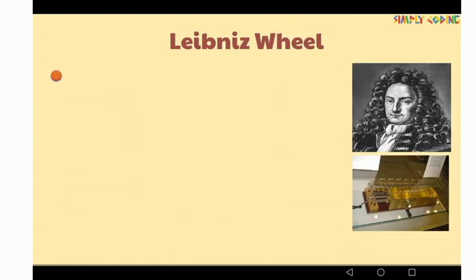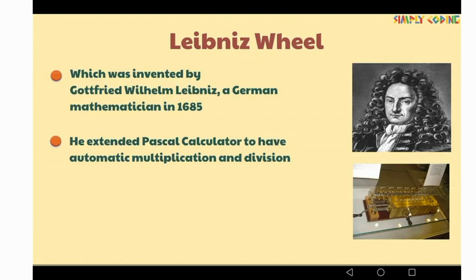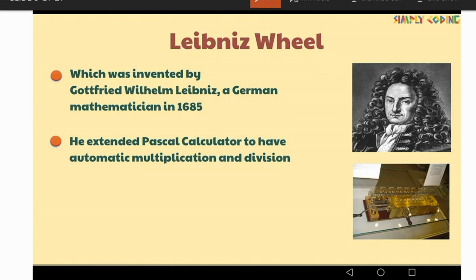Next is the Leibniz Wheel, which was invented by Gottfried Wilhelm Leibniz, a German mathematician. The device was developed in 1685. He extended Pascal's calculator to have automatic multiplication and division. We can also say that this is the improved version of the Pascaline.